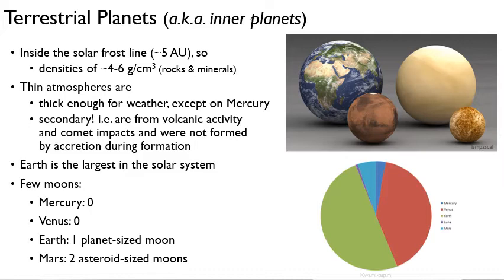The terrestrial planets don't have very many moons. Mercury and Venus don't have any. Earth has a pretty massive moon - the moon's pretty big. We'll talk about it next time, but it's probably a captured planet. And Mars has two asteroid-sized moons.